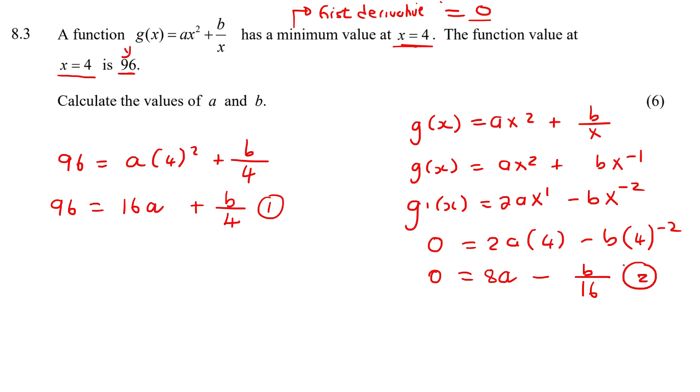We all know where we are now. So what I'm gonna do, there's multiple ways you could do this. But I'm going to get b by itself in this equation. So I'm gonna bring the 16a over. I'm then gonna multiply everything by 4. So 384, so I'm multiplying this 4 over, minus 64a equals to b.